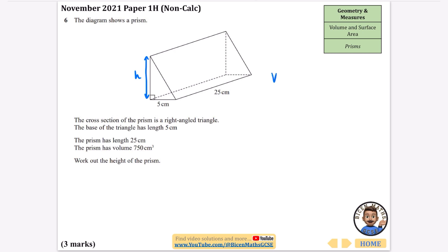This is what I'm going to try to work out. The volume of a prism is the cross-sectional area multiplied by the length. I'll find out what the cross-sectional area is. The volume is 750, so it's the area multiplied by the length, which is 25. I'll do 750 ÷ 25.